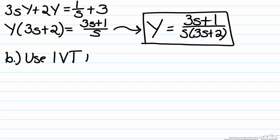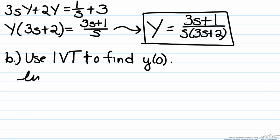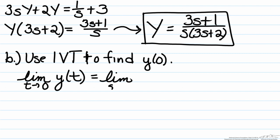Part B is asking us to use the initial value theorem to find y of zero. So first let's state the initial value theorem, which is that the limit as t approaches zero of a function y of t equals the limit as s approaches infinity of s multiplied by y of s. One of the major utilities of the initial value theorem is that it allows us to do a quick check to make sure that what we put in the Laplace domain is correct. It's not a fail-safe, but if the initial value theorem doesn't hold in the Laplace domain, that means we made an error in our analysis.